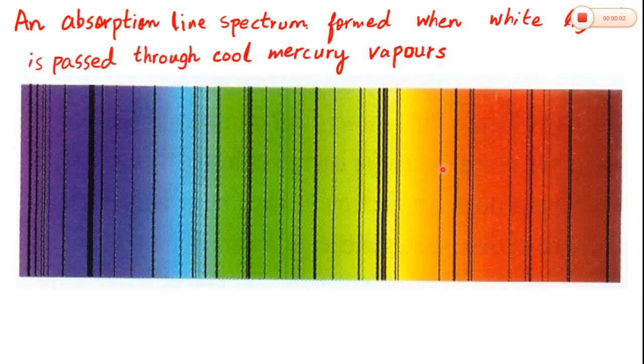Now absorption line spectrum. When white light is passed through cool gases like cool mercury vapors and then through a diffraction grating, an absorption line spectrum is formed. Certain wavelengths are absorbed, hence black lines appear in the continuous white line spectrum.